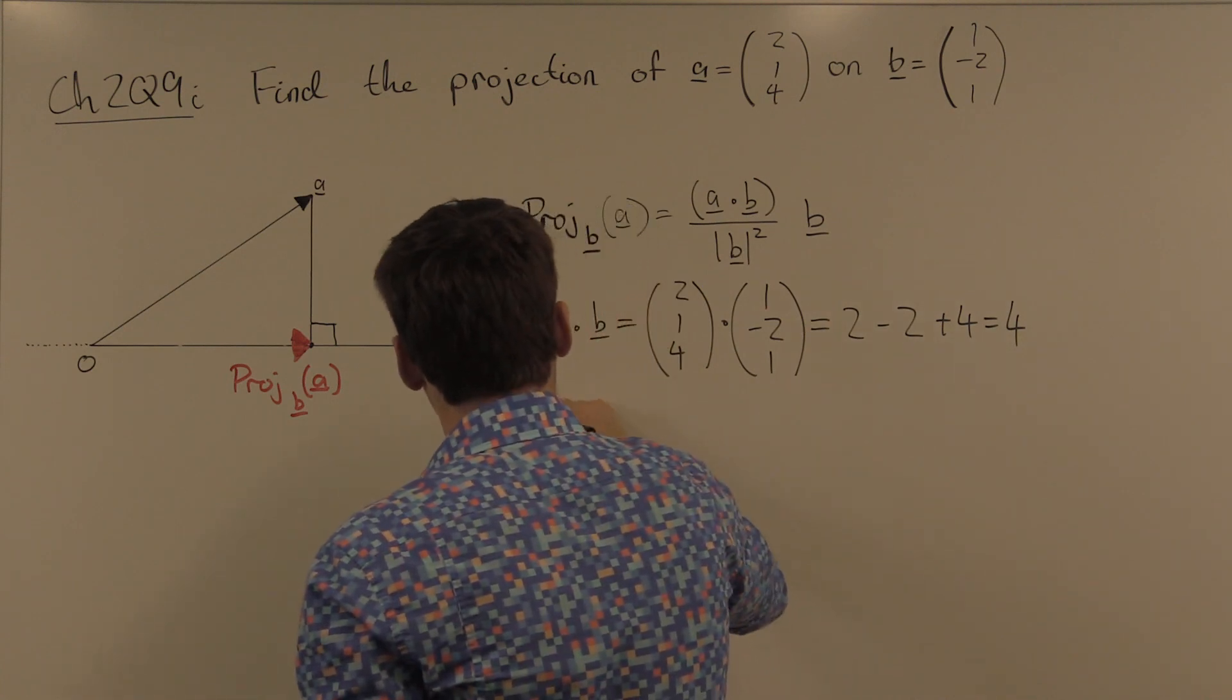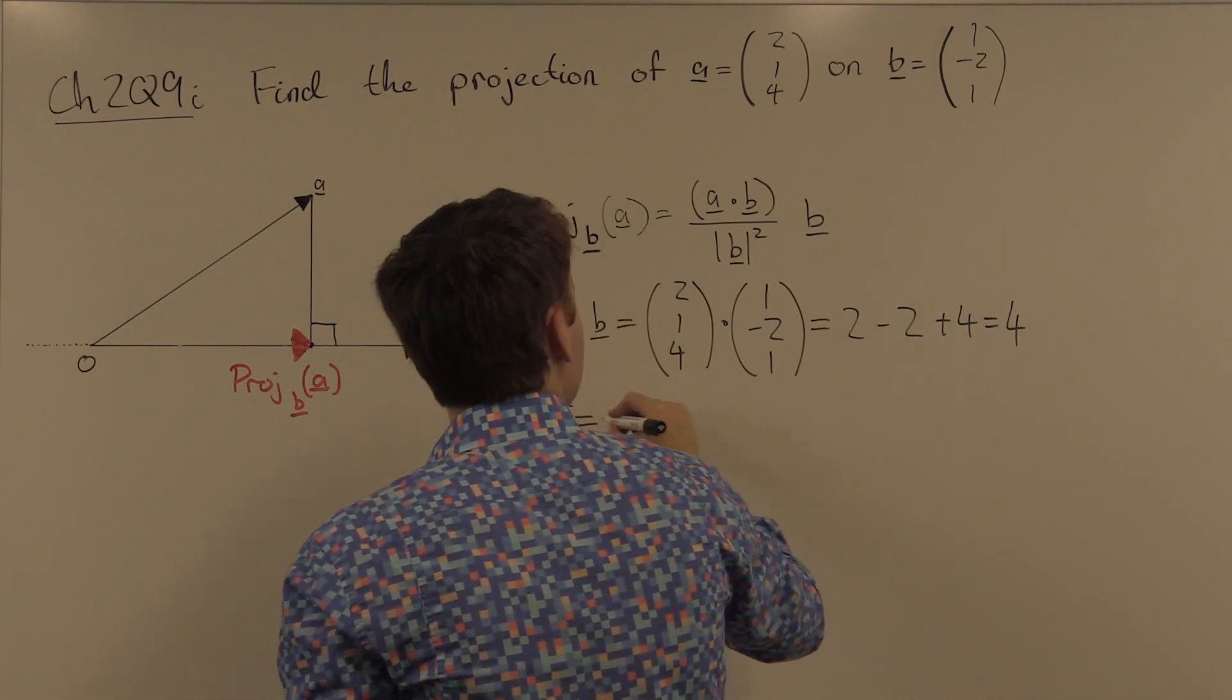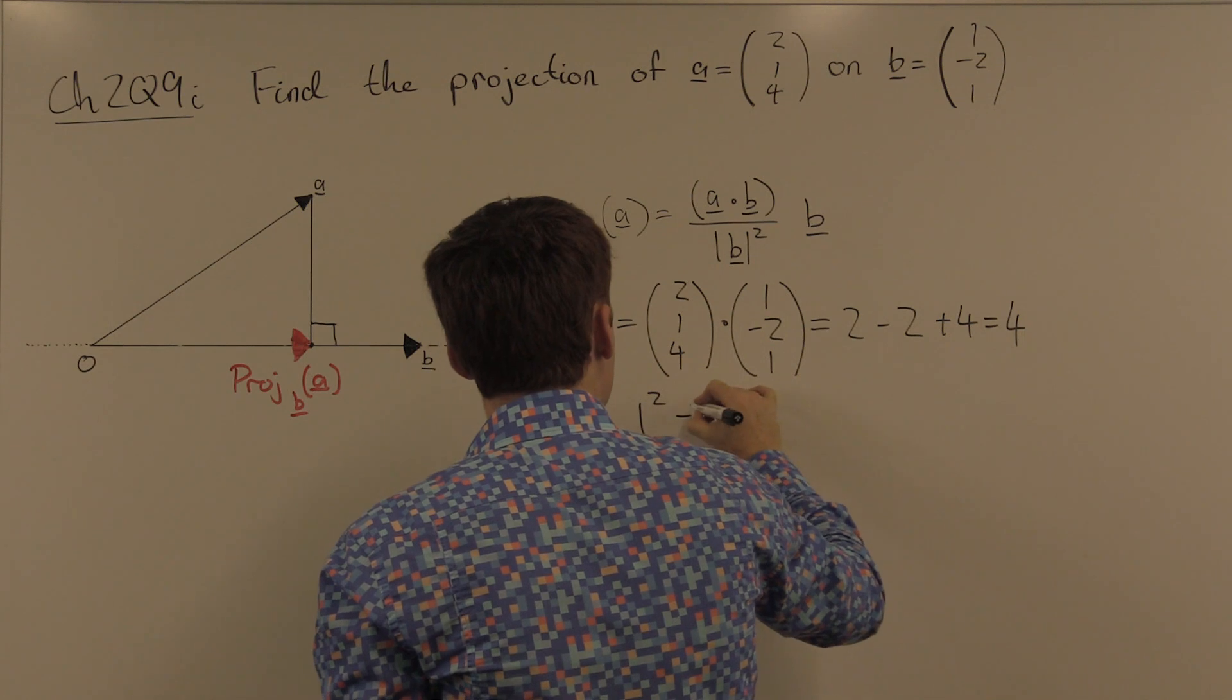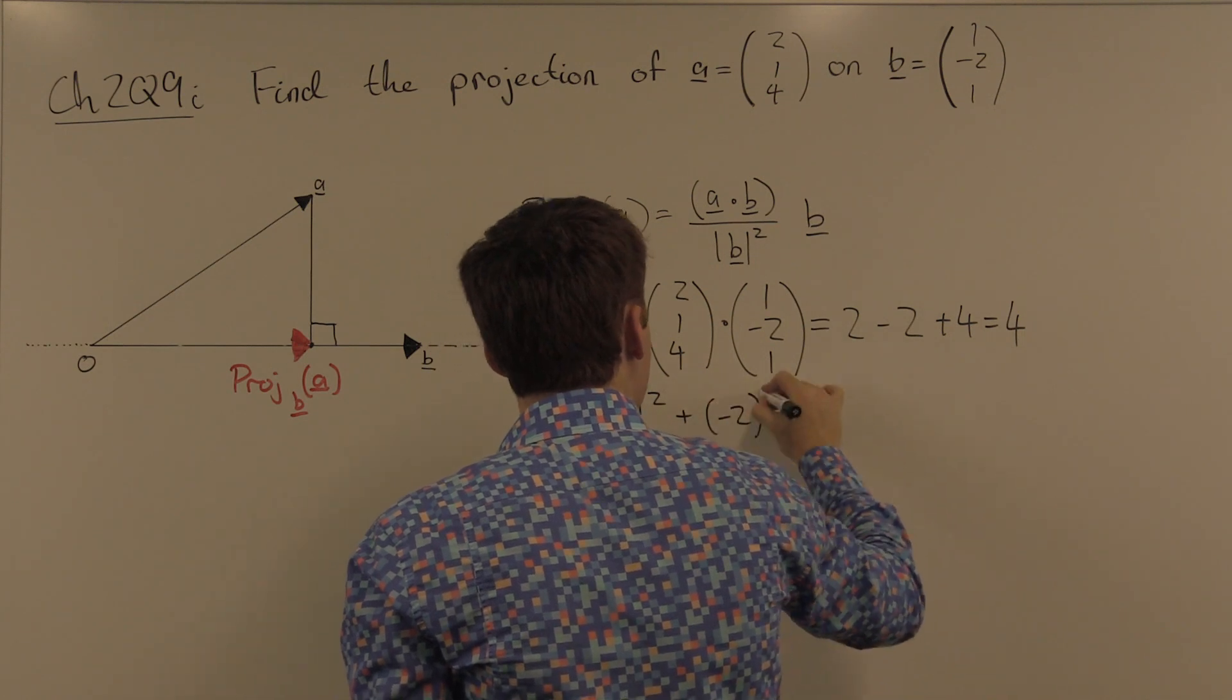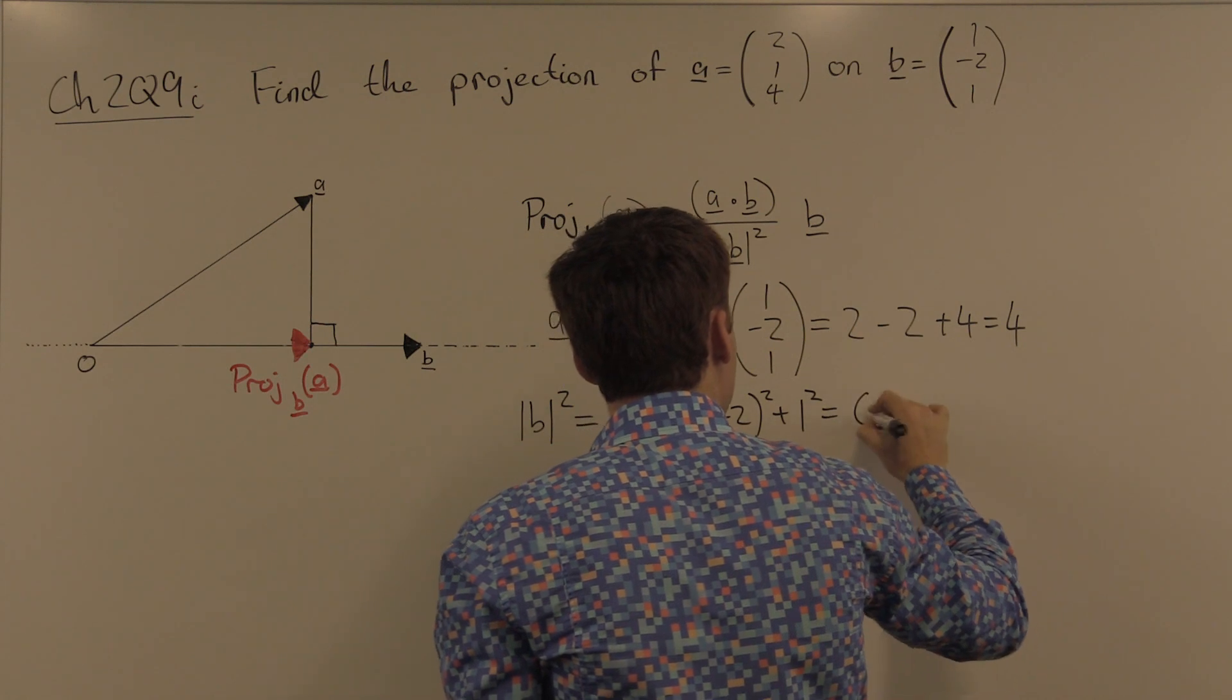And length b squared is equal to 1 squared plus negative 2 squared plus 1 squared, which is equal to 6.